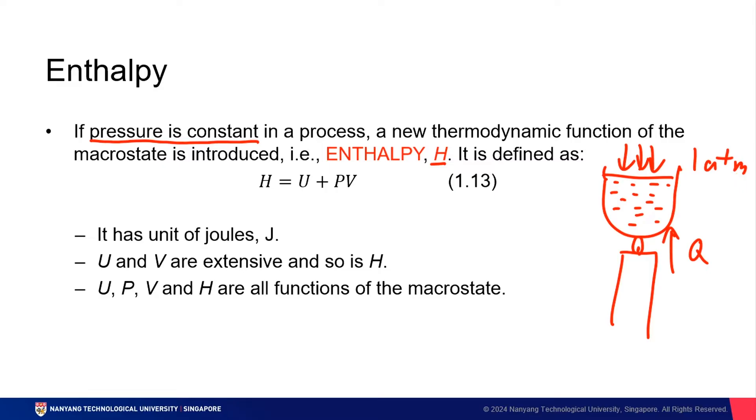And enthalpy can function as a macrostate on itself, and it is defined by H equals to internal energy plus PV. So H equals to U plus PV has the same unit, joules. And internal energy and volume are both extensive properties, hence so is enthalpy.